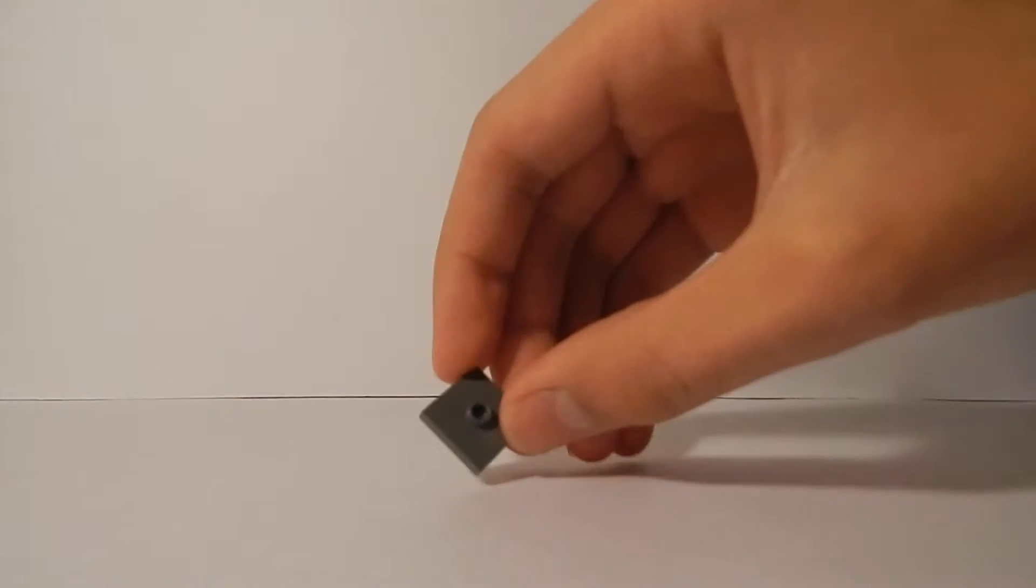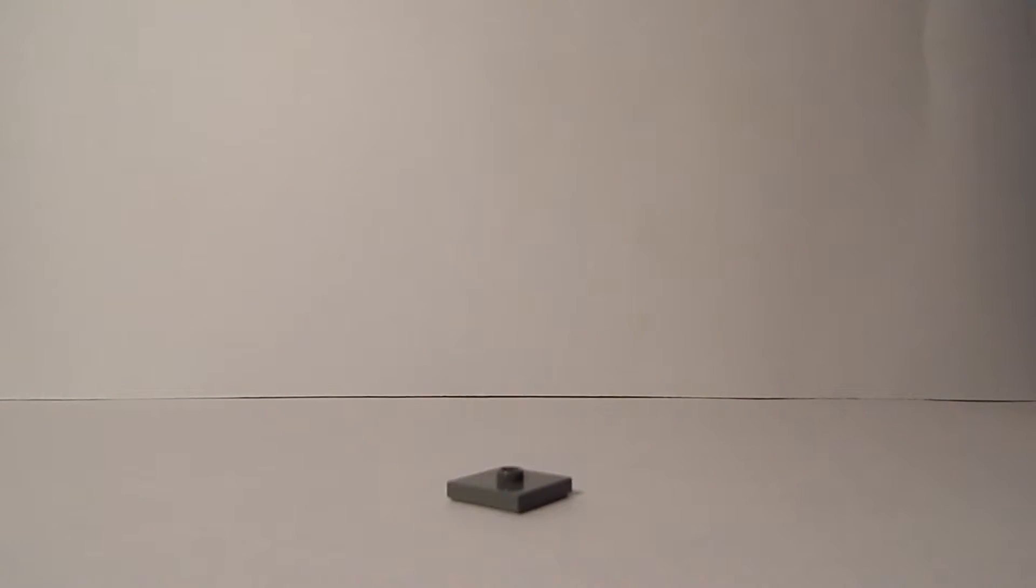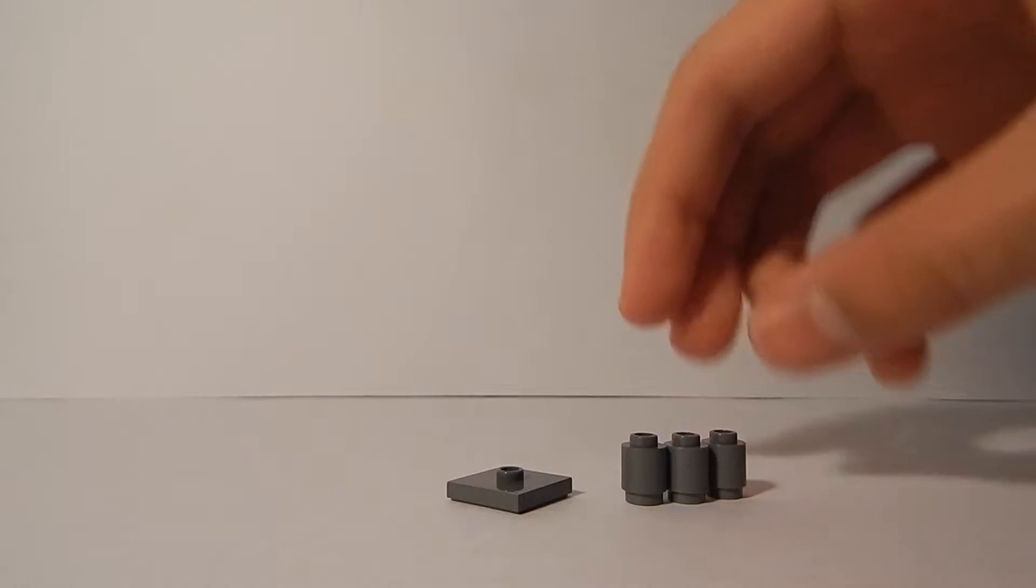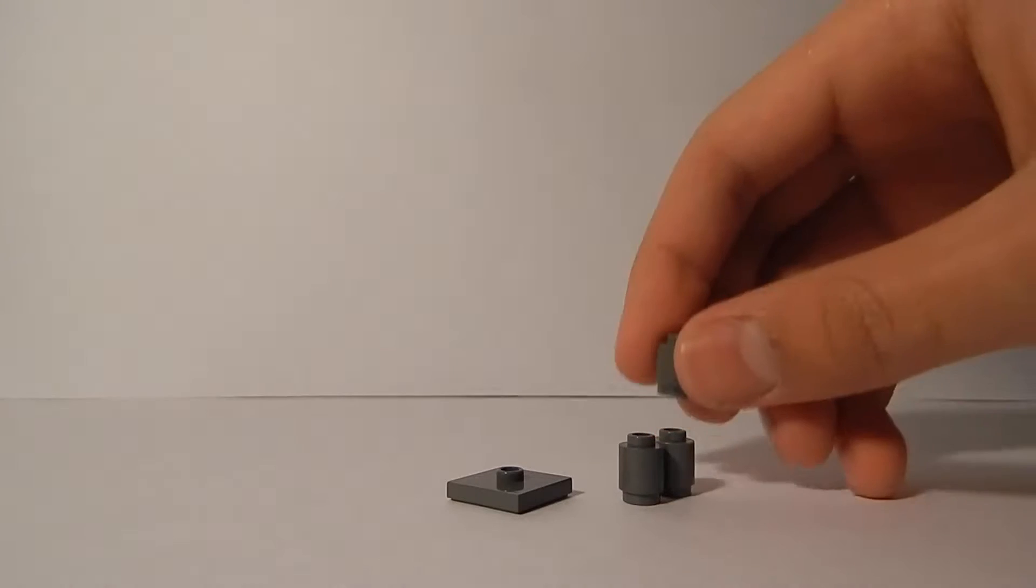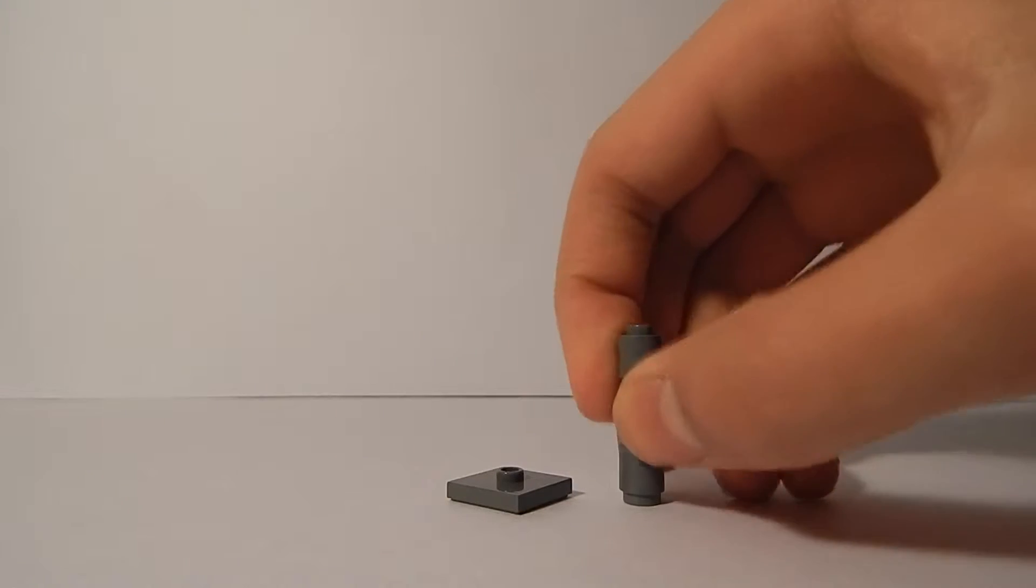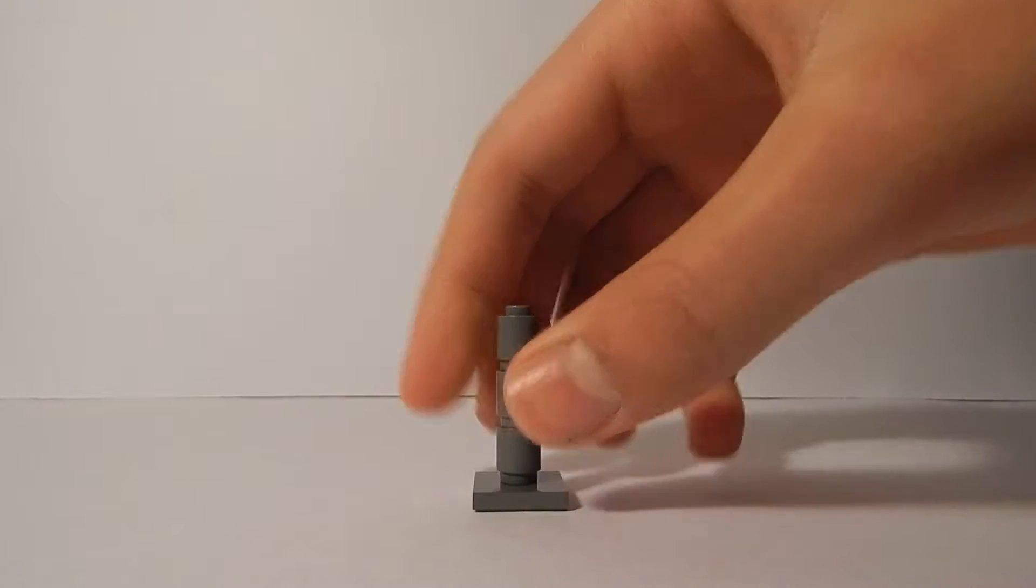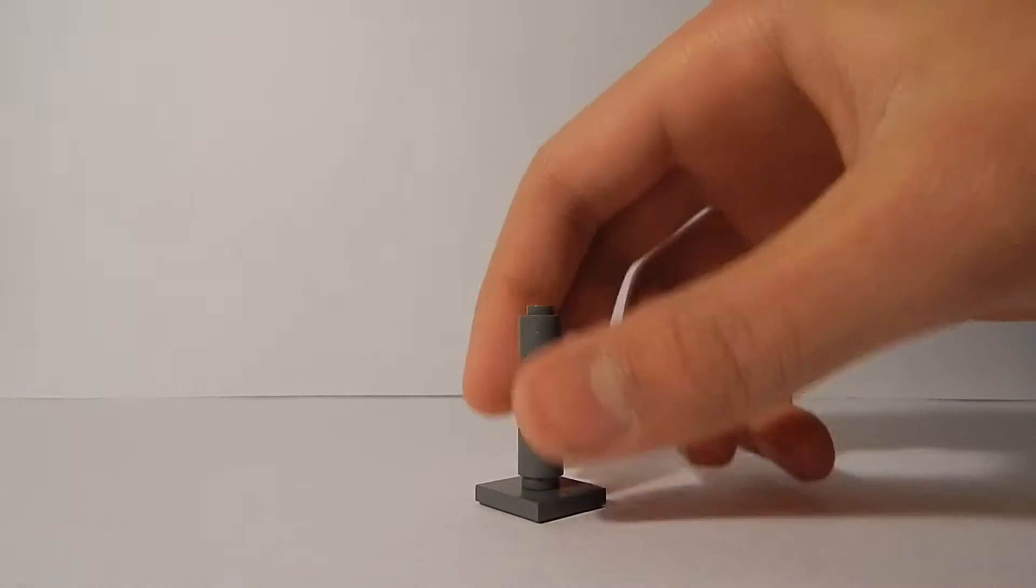To get started I'm going to grab a 2x2 jumper plate and three of these 1x1 circular bricks. I'm going to stack the three on top of each other to make the tripod for our telescope and place that on top of my 2x2 jumper plate, positioned off to the side.